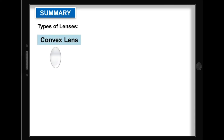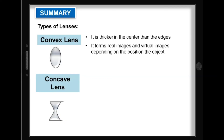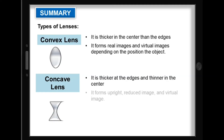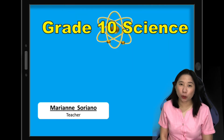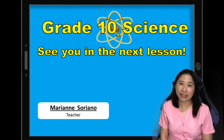To summarize what you have learned, there are two types of lenses: convex lens and concave lens. For convex lens, it is thicker in the center than the edges. It forms real images and virtual images depending on the position of the object. For concave lens, it is thicker at the edges and thinner in the center. It forms upright, reduced image, and virtual image. I hope you learned and enjoyed our lesson. This is Marian Suriano. See you in the next lesson.